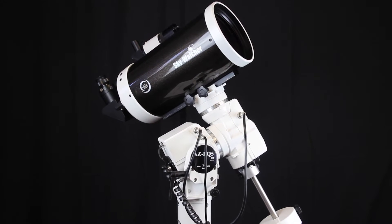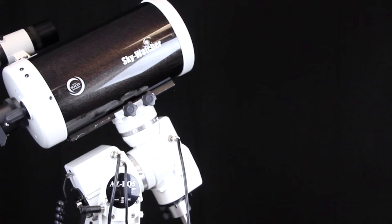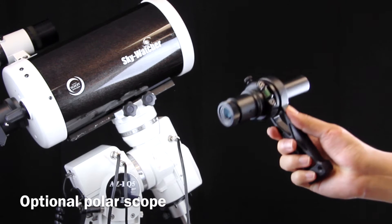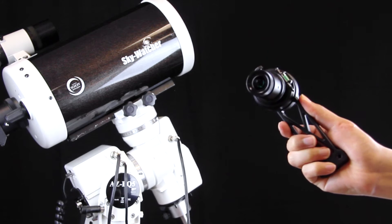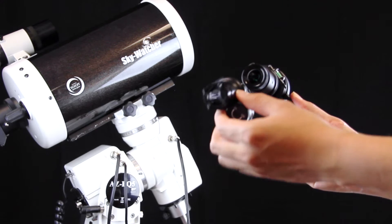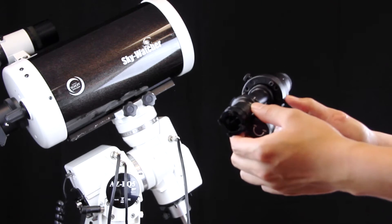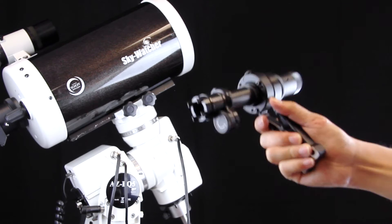That would be enough if you just want to do some visual work. But if you need to do more accurate polar alignment, such as for long exposure photography, you can use the polar scope. The azEQ5 comes with an optional polar scope.